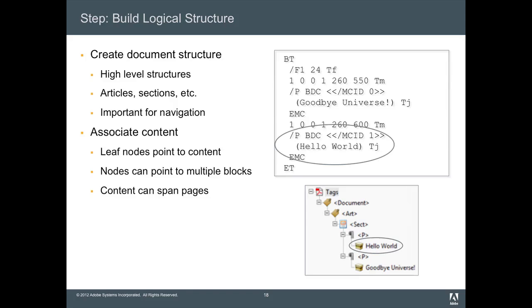Once you've done all that page segmentation — identified the real content and the artifacts — you then have to build a logical structure. This is quite hard: deciding on the right structure of a document. It's not always obvious which tags you should use, what they mean, or which you shouldn't use. But you need some sort of document structure that indicates the higher levels of the document — chapters, articles, potentially sub-documents. Then you need to associate the structure tree with these marked content sequences. On this paragraph node, I've said it has this content, identified by MCID1. That's how I associate structure to the content.